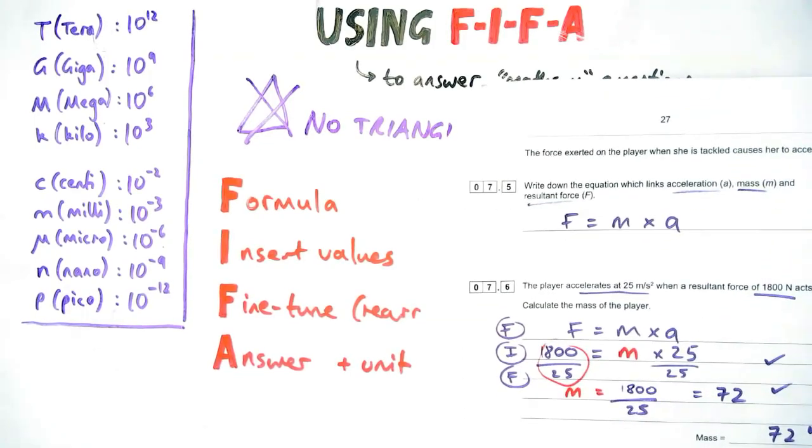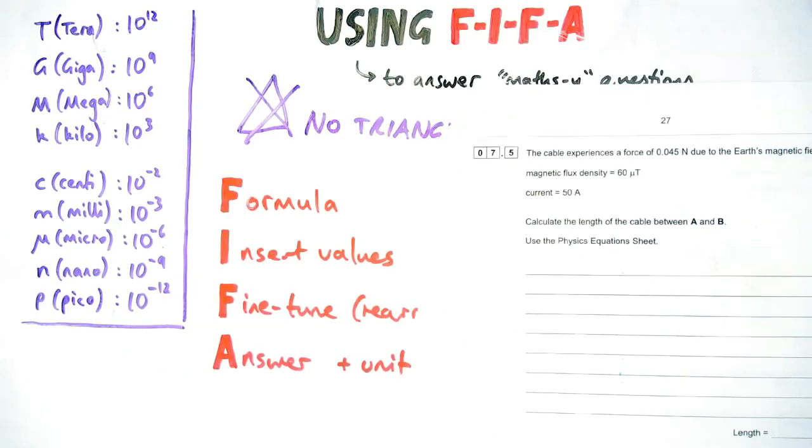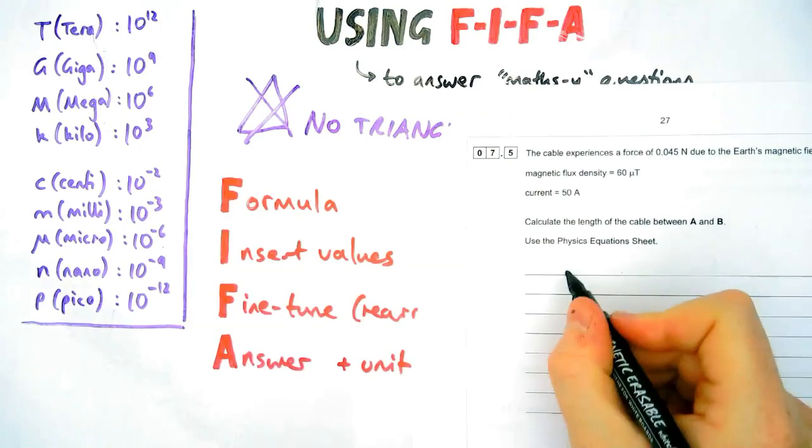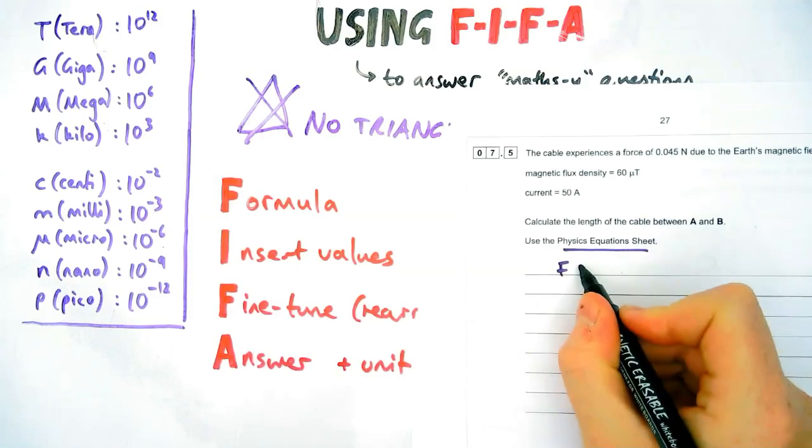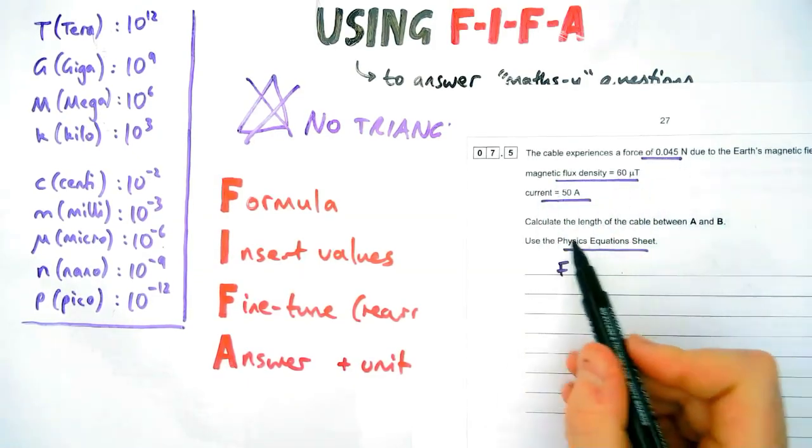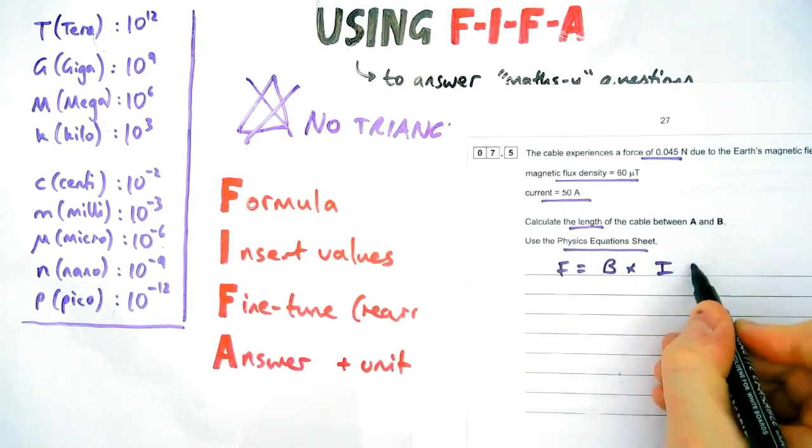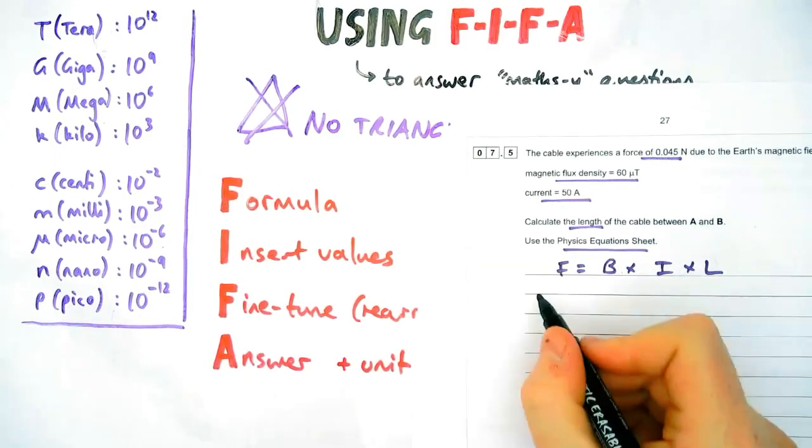Now they can get a little bit trickier. Let me show you this. This is worth four marks and is on combined and separate science paper as well. So for this we've got a force, we've got magnetic flux density and current, and we're trying to find the length. There's only one equation on your formula sheet that can help you with this, which is this one: F equals force equals flux density times current times length.